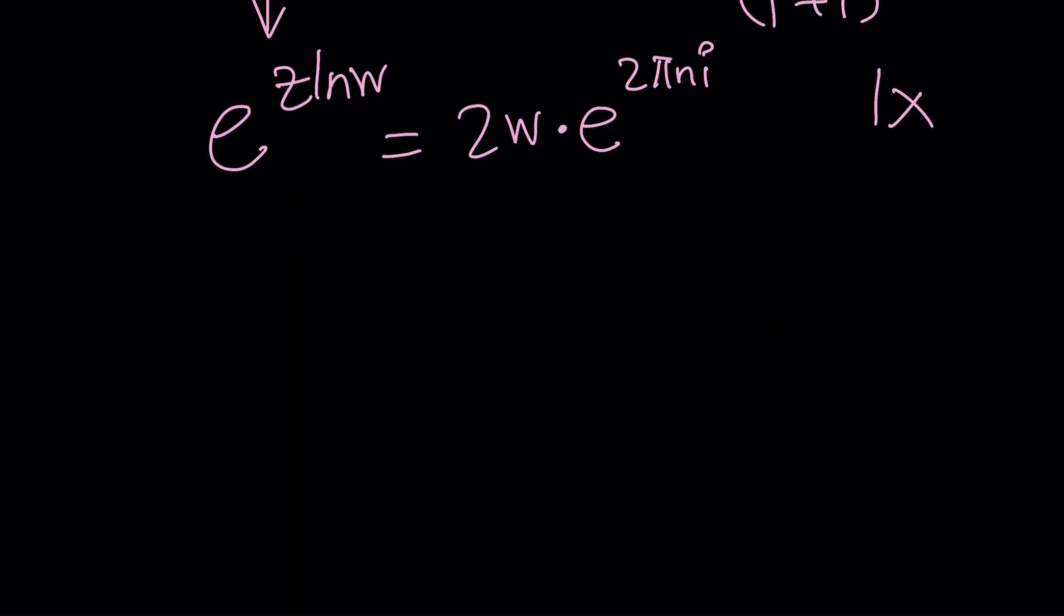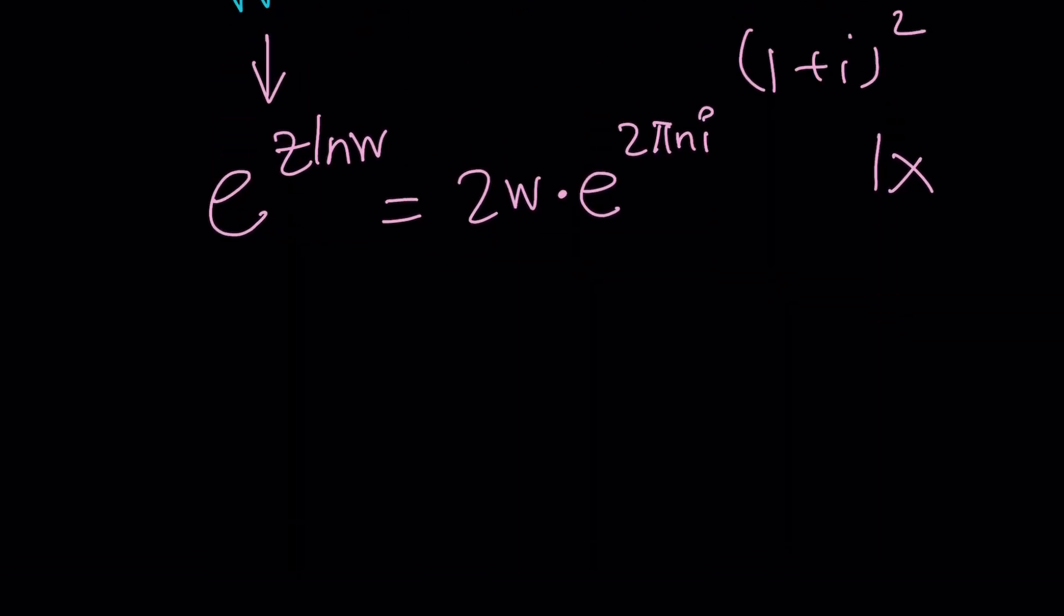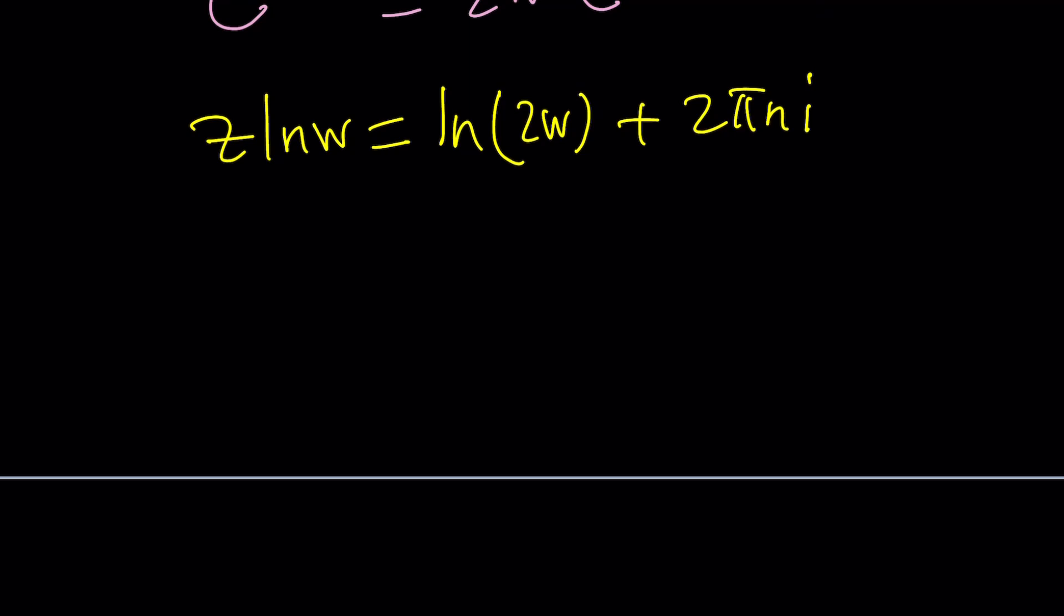All right. So it's called an exponentiate I mean anti-exponentiate both sides in other words natural log. That's going to give us z ln w equals ln 2 w plus 2 pi n i. Awesome. Now remember our goal is to solve for z. So let's go ahead and divide both sides by ln w. That's going to give us z equals ln 2 w plus 2 pi n i divided by ln w. So the answer we found with the first trial wasn't super bad except if you replace n with 0 obviously you would get the same thing. But that only gave you one solution. This gives you infinitely many solutions.